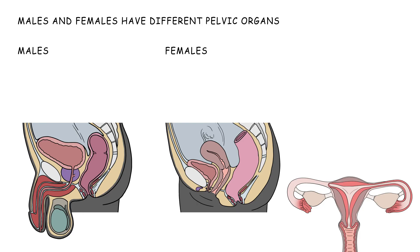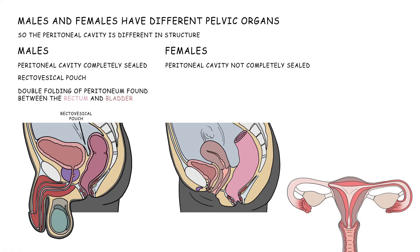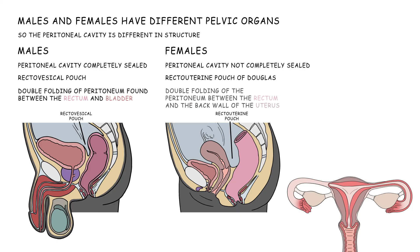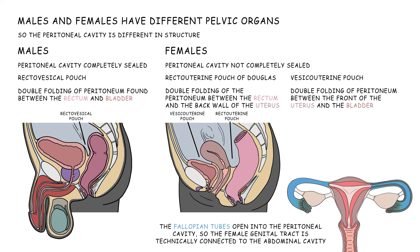Having different pelvic organs means that the peritoneal cavity differs in structure in males and females. The peritoneal cavity is completely sealed in males, but not in females. Males have a recto-vesical pouch, a double folding of peritoneum, found between the rectum and bladder. Females have the recto-uterine pouch of Douglas, a double folding of peritoneum between the rectum and the back wall of the uterus, and a vesico-uterine pouch between the front of the uterus and the bladder. The fallopian tubes open into the peritoneal cavity, so the female genital tract is technically connected to the abdominal cavity.